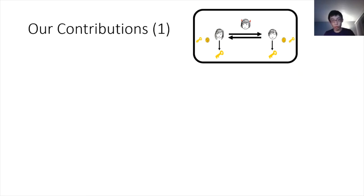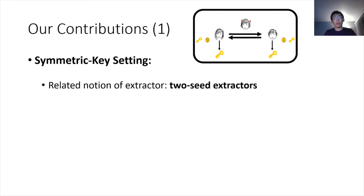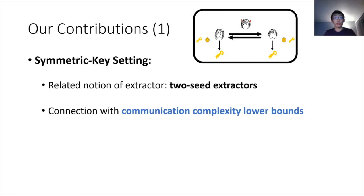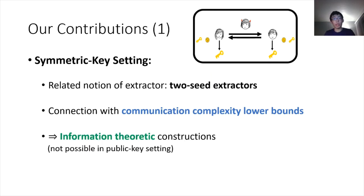Now I can describe our contributions. Our first contribution is to consider the symmetric key setting. We show that there is a strong connection between such symmetric key exchanges and a randomness extractor primitive that we call true-seed extractors. It turns out those true-seed extractors are in turn intimately connected with communication complexity, and using communication complexity lower bounds, we can get information-theoretic constructions in the symmetric key setting.